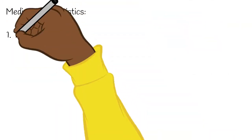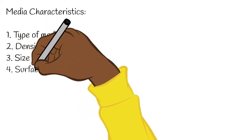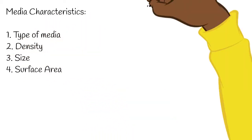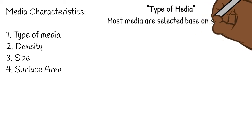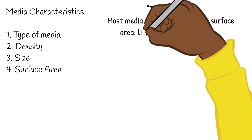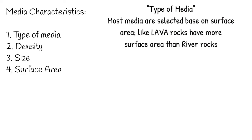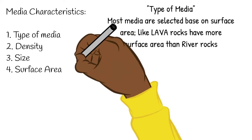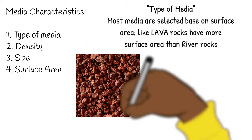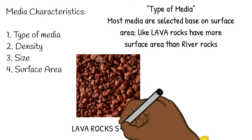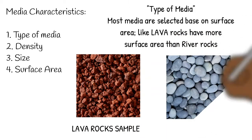Media characteristics include the type of media, density, size, and surface area. Most media are selected based on their surface area — for example, lava rocks have more surface area than river rocks. Here are samples of lava rocks and river rocks for comparison.